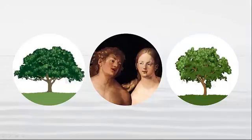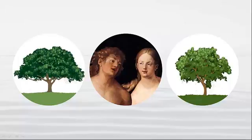According to Genesis, God created Adam and Eve and placed them in the Garden of Eden. Also in the Garden were two special trees: the Tree of Life and the Tree of the Knowledge of Good and Evil. God told Adam and Eve that the fruit of the Tree of the Knowledge of Good and Evil was forbidden, and commanded them not to eat it.